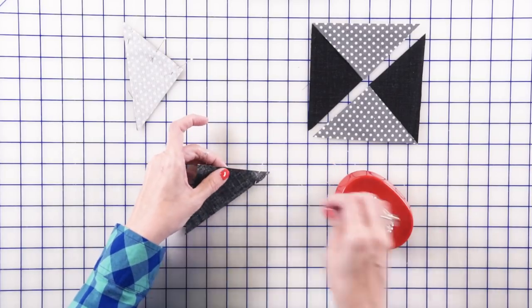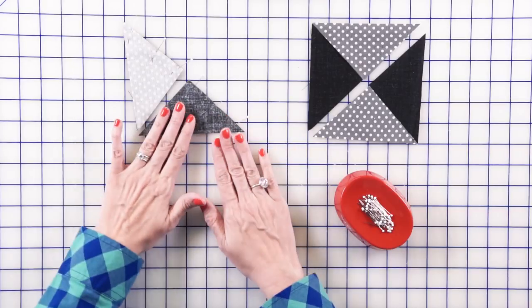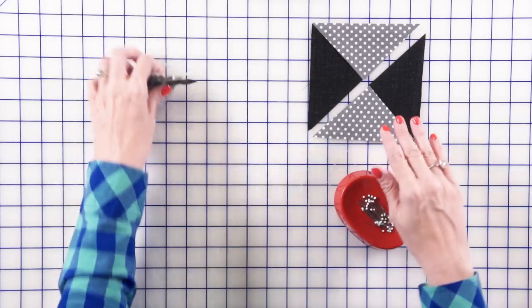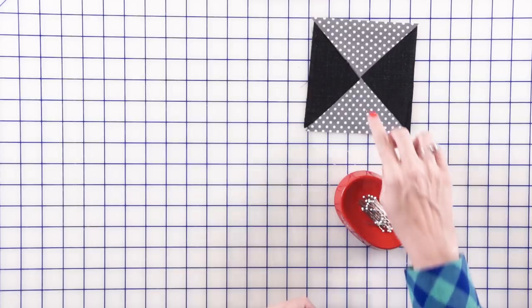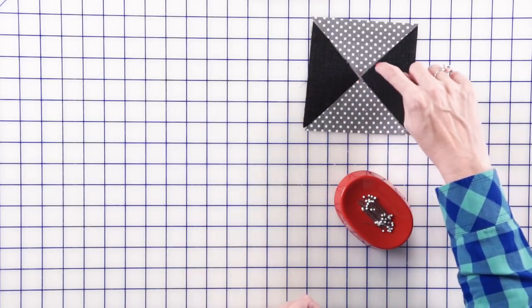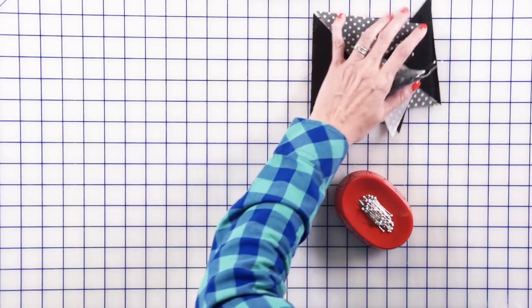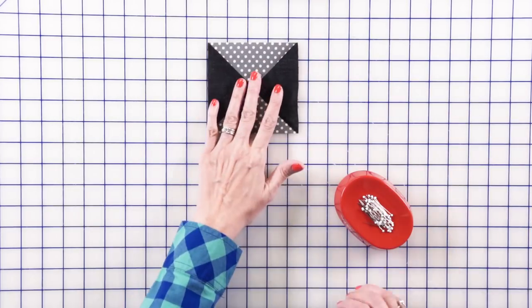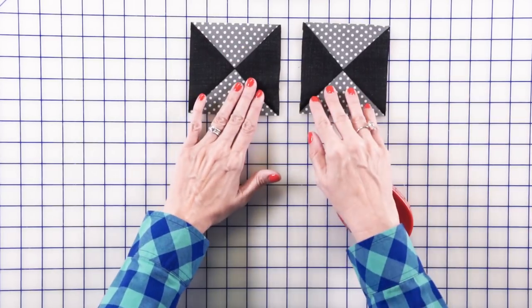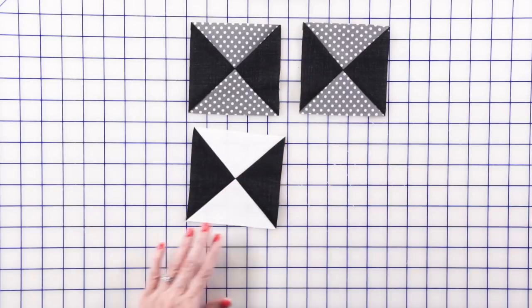So you're going to sew those together and press according to your pattern. It's going to look like this. Then you're going to stitch those together. And when you're stitching that together, you're also going to pin in the intersection on both sides and in the center. So nothing shifts. When you sew that together, it's going to look like this. And you're going to make two that have gray and two that have white.